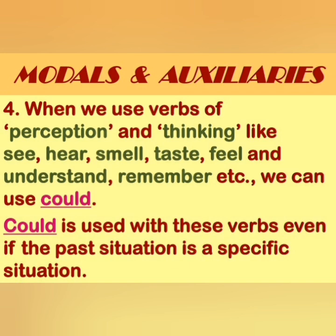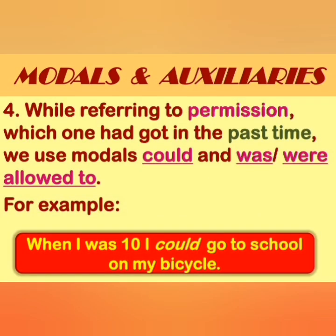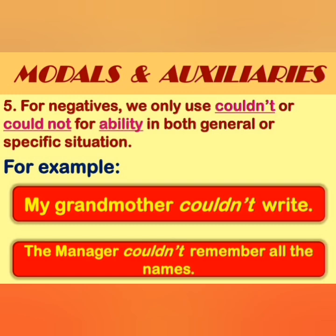For negatives, we use only 'couldn't' or 'could not' for ability in both general or specific situations. For example, 'My grandmother couldn't write' and 'The manager couldn't remember all the names.' So 'couldn't' is used as the negative and represents ability — or lack of ability — in general or specific situations.